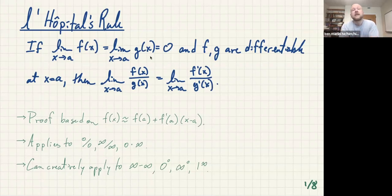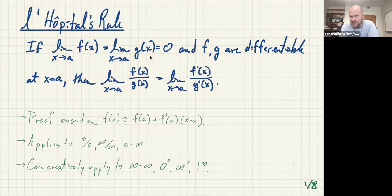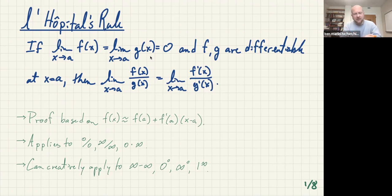So L'Hopital's rule — and please, it is L'Hopital, not L'Hopital. If you think I'm making fun of your accent, I'm not — I'm making fun of my own accent. Sometimes you'll see it spelled with an S in there, but it's a silent S. L'Hopital does mean 'the hospital,' but it's named after a person — a French person. There's actually a fun historical note on this; check and see if your textbook has that.